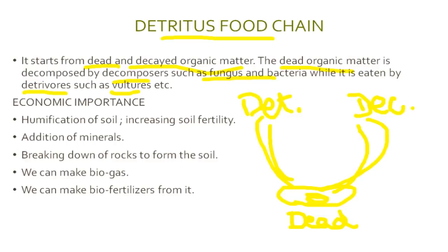The detritus food chain is economically very important. It causes humification of soil and increases soil fertility. It also helps in the addition of minerals in the soil, and in breaking down of rocks to form soil. We can make biogas from it, which is an energy source, and we can also make biofertilizers, which are helpful in sustainable agriculture.